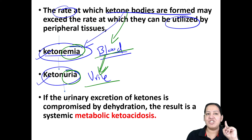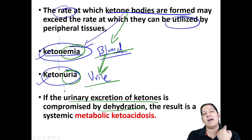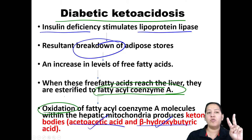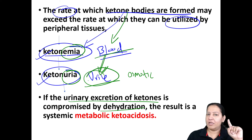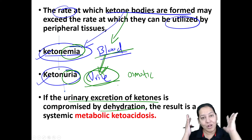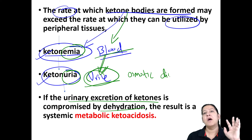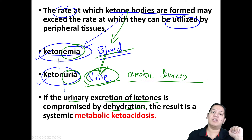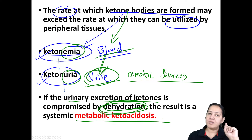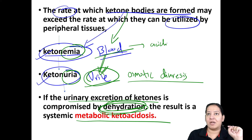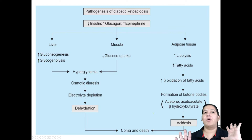Acetoacetic acid and beta-hydroxybutyric acid are osmotic in nature — they drag water along with them. So ketone bodies excreted in urine cause osmotic diuresis, dragging all the water from the blood vessels. This leads to patient dehydration. Additionally, ketone bodies are acidic in nature, so the patient has more acid in the blood — metabolic ketoacidosis — along with dehydration.